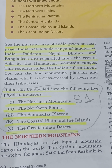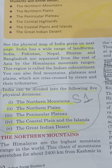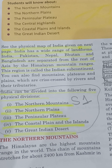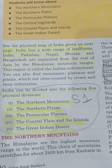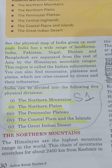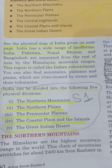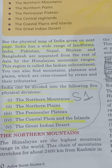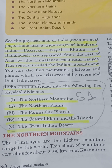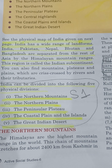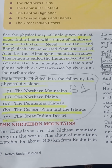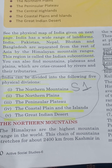You can also find mountains, plateaus and plains which are criss-crossed by rivers and their tributaries. India can be divided into the following five physical divisions.